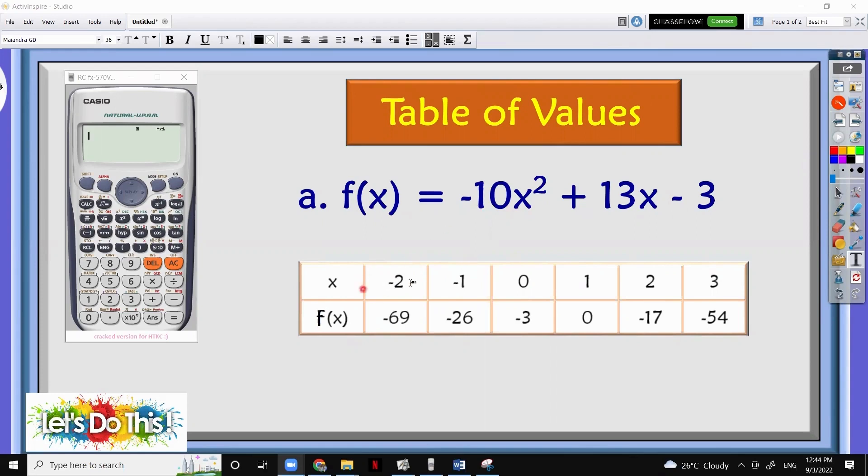For example, we will use this negative 2. So negative 10 times negative 2 squared plus 13 times negative 2 minus 3. So we come up with negative 69.